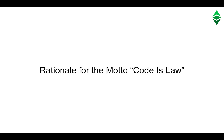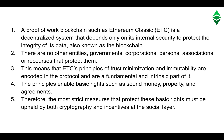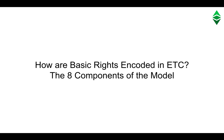Rationale for the motto 'code is law': a proof-of-work blockchain such as Ethereum Classic (ETC) is a decentralized system that depends only on its internal security to protect the integrity of its data, also known as the blockchain. There are no other entities — governments, corporations, persons, associations, or recourses — that protect them. This means that ETC's principles of trust minimization and immutability are encoded in the protocol and are a fundamental and intrinsic part of it. The principles enable basic rights such as sound money, property, and agreements. Therefore, the most strict measures that protect these basic rights must be upheld by both cryptography and incentives at the social layer.